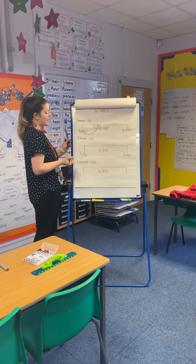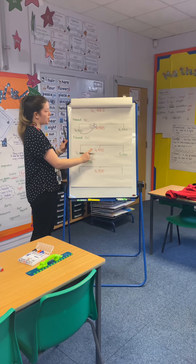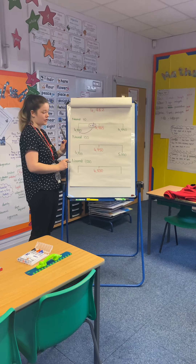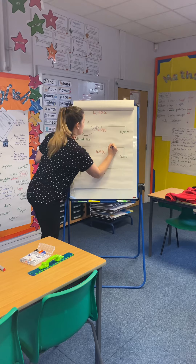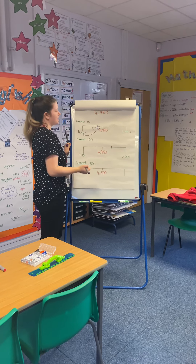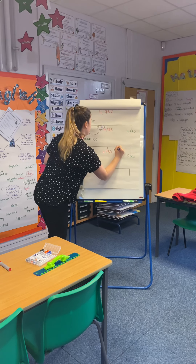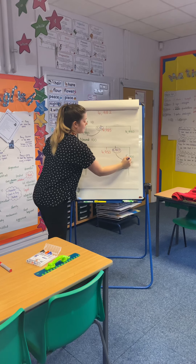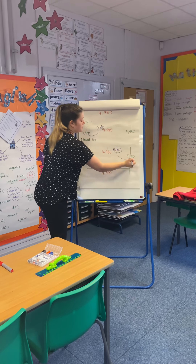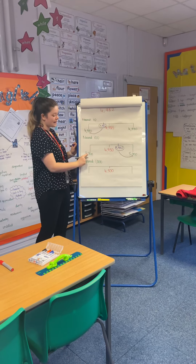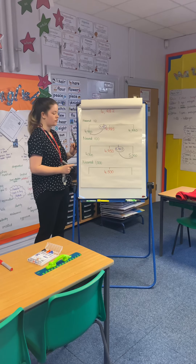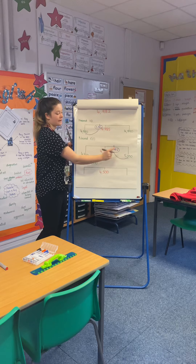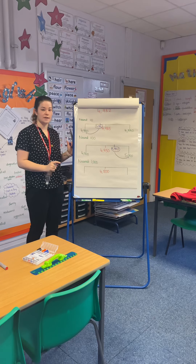So 4,982 — we can see that that is greater than 4,950, so I'd put that around here on my number line. I can see that that is closer to 5,000 than it is to 4,900. So 4,982 rounded to the nearest 100 is 5,000.